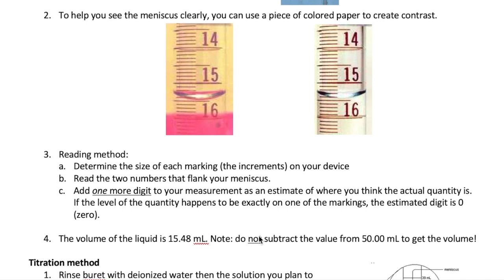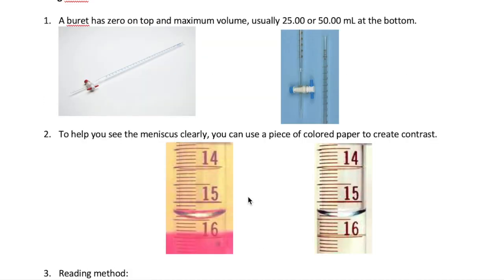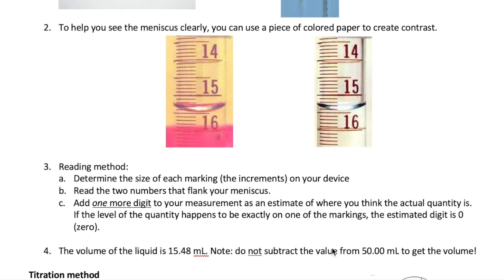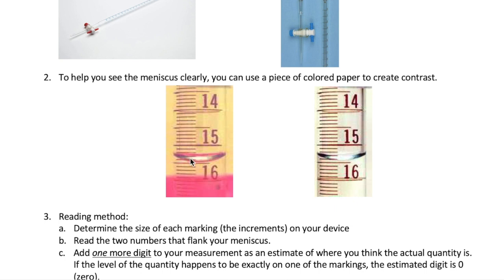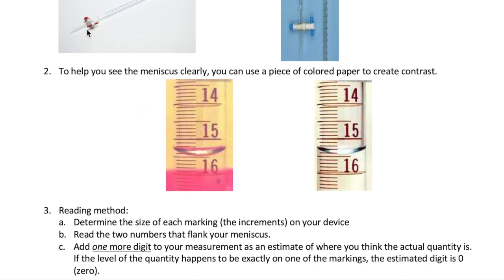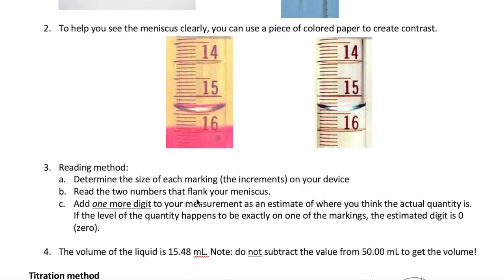One common mistake is to subtract the burette reading from the maximum value. For example, subtracting 15.48 from 50 — that's incorrect. What matters is not what's in the burette, but how much volume you've taken out. So you need the beginning volume in the burette and the final volume after opening the stopcock and letting liquid out. The difference between those two readings is the volume dispensed, and that's what we'll use in this experiment.